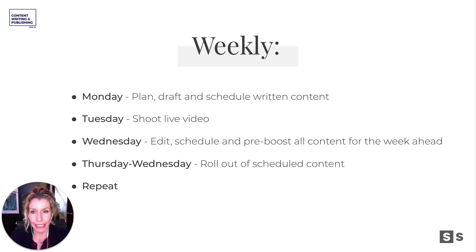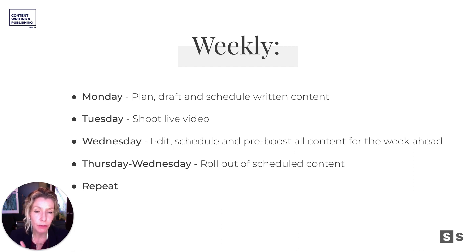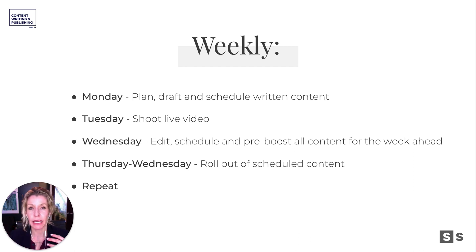So if we were to do this weekly, what it might look like is that on Mondays we plan, draft, and schedule out the written or the keystone content. Tuesday, we would shoot live video or write that bigger piece. Wednesday, perhaps we edit, schedule, and pre-boost all the content for the week ahead. And then Thursday to Wednesday, we roll out that scheduled content and repeat it. So that would be making everything happen on a Monday, Tuesday, and Wednesday one week at a time — which is a lot.